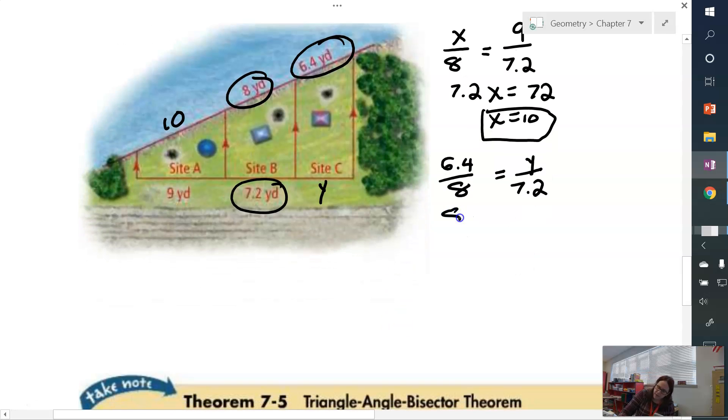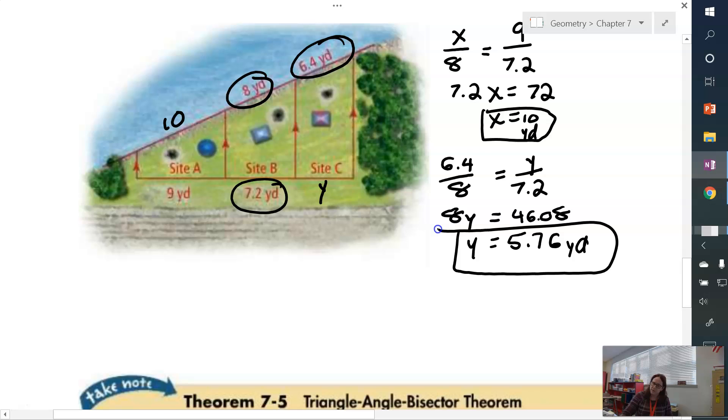I'm going to get 8Y equals 46.08. Now divide both sides by 8, and I get Y equals 5.76. And these are yards, by the way. Don't forget your units. Perfectly all right to get a decimal. It's just a number.